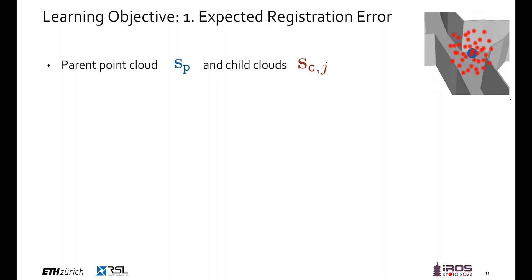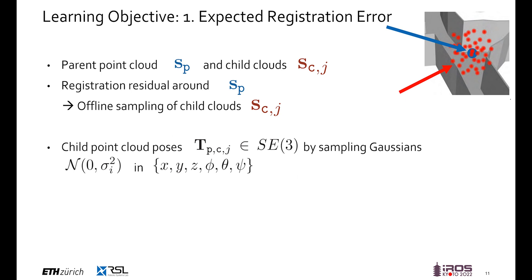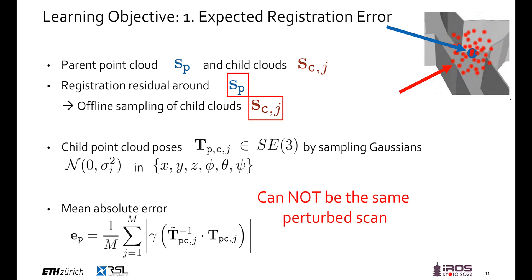For the computation of the expected registration error, we define parent point clouds Sp and child clouds Sc. For each of the parent point clouds, recorded at the blue location in the top right image, child point cloud poses, depicted in red, are sampled around the parent poses. This is done by drawing from a random distribution around the parent. After running ICP, the mean absolute error of this registration can be interpreted as an estimate of the expected registration error. It is important to note that Sp and Sc cannot be the same distorted or moved cloud. Instead, a new point cloud needs to be recorded for every child.